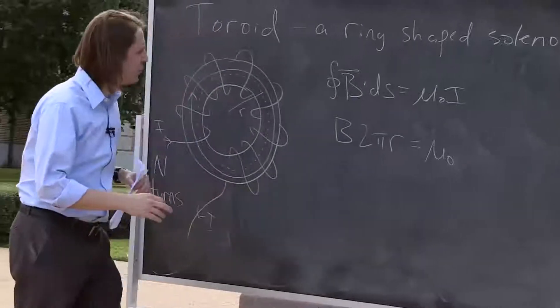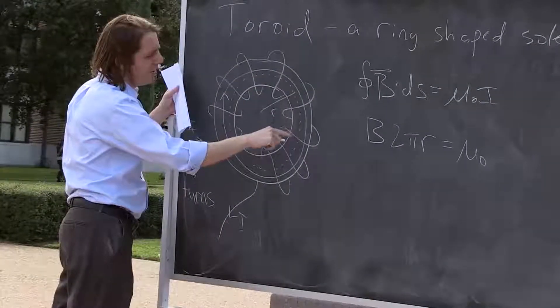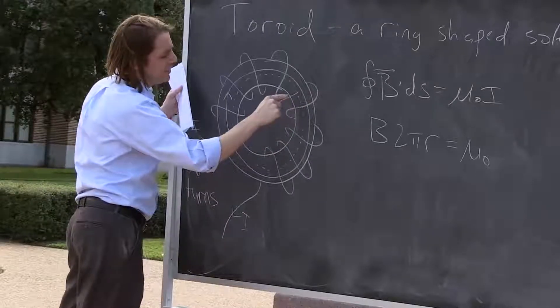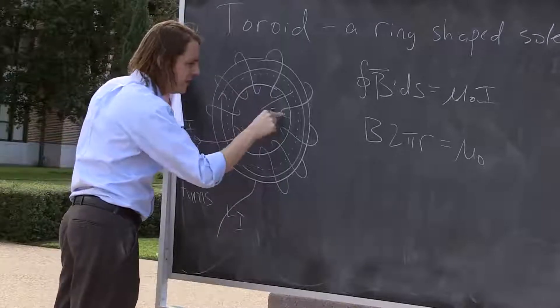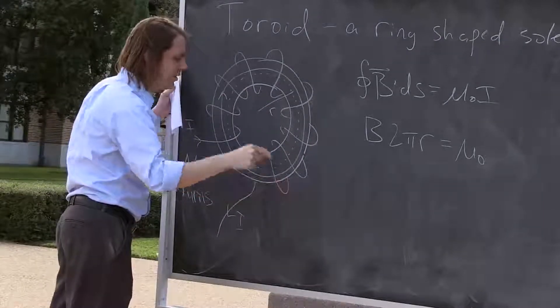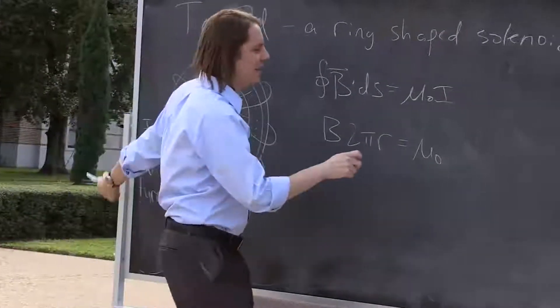And then how much current goes through this Amperian loop? Well, it goes through on every turn. See, here it's going, like if we consider the inside of the Amperian loop, here it goes in, then it comes out and it goes in, then it comes out and it goes in, then it comes out and it goes in. So it's N times I.